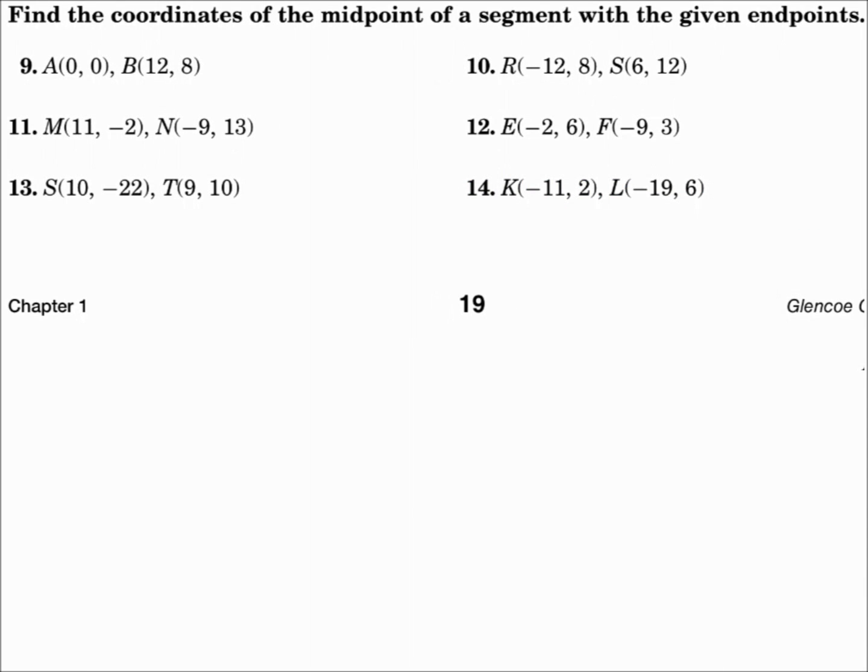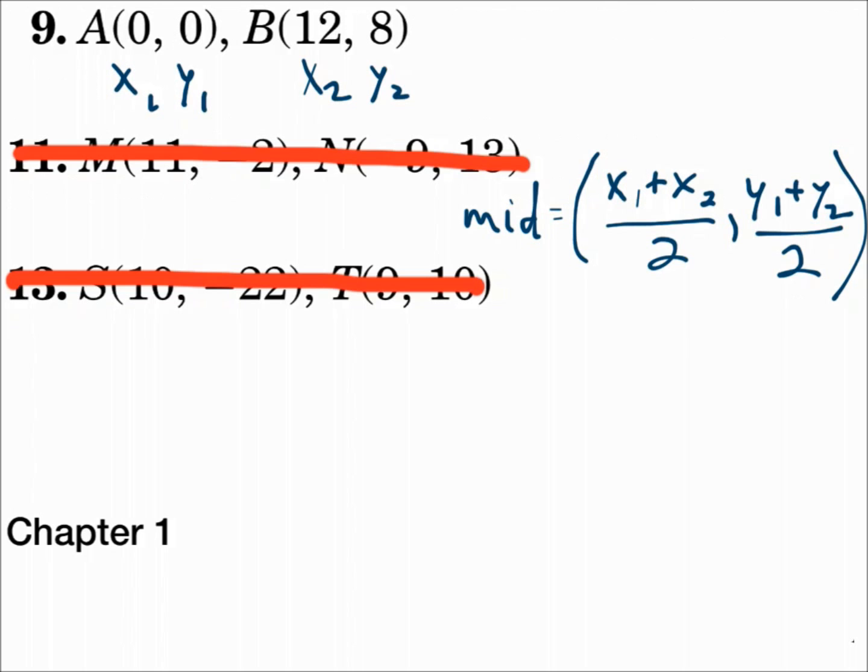Find the coordinates of the midpoint of a segment with the given endpoints. On the coordinate plane, we use the midpoint formula. So substitute your values in. (0, 0) is x₁, y₁. (12, 8) is x₂, y₂. So it will be 0 plus 12 over 2, to add the x's and divide by 2, and then y₁ plus y₂ over 2.